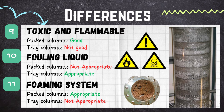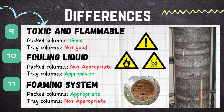Regarding fouling liquids, the packed column is not recommended when dealing with fouling liquids because the packing is more prone to becoming choked. Plate columns are appropriate and recommended when dealing with fouling liquids. For foaming systems, the packed column is more appropriate compared to the tray column, because in tray columns the holes or sieves can get choked due to foaming, which restricts vapor-liquid contact.